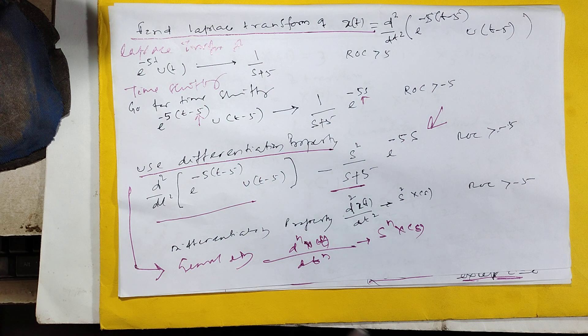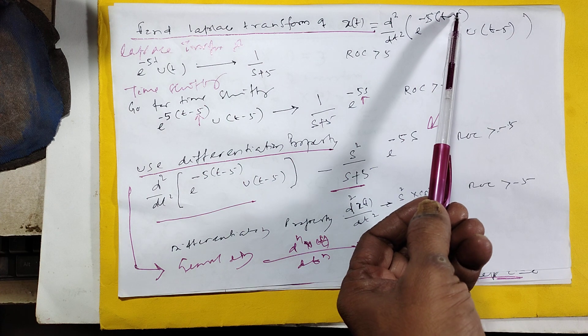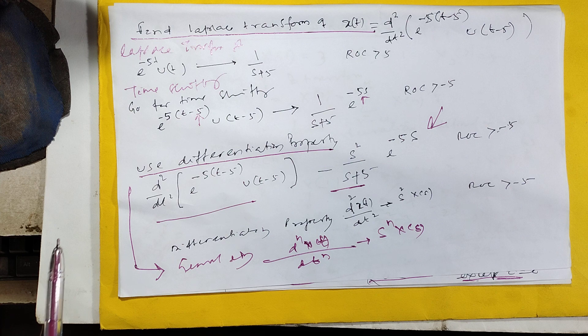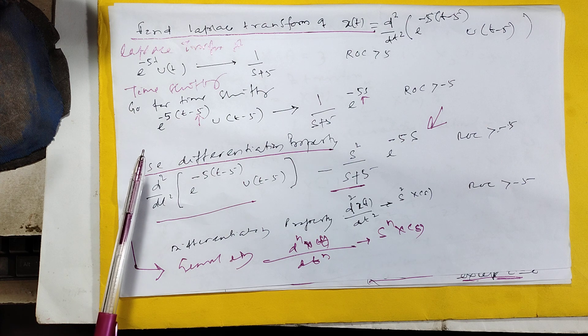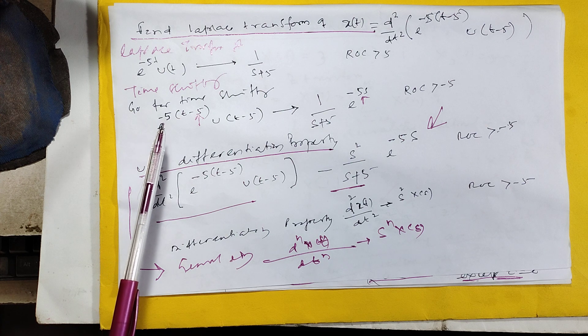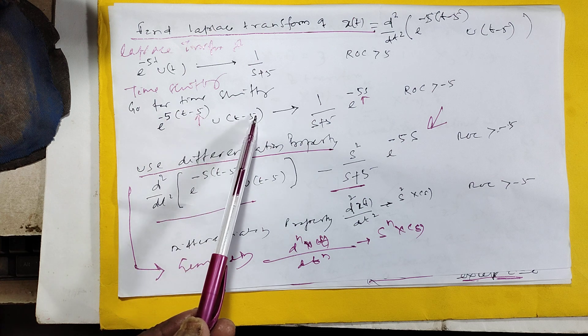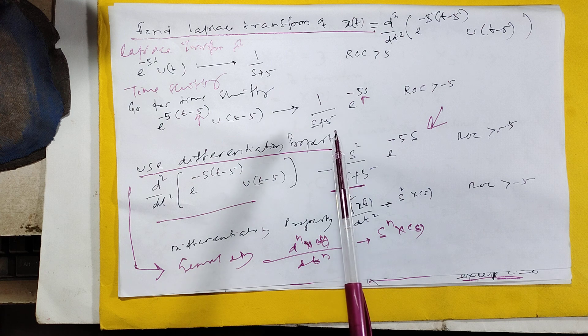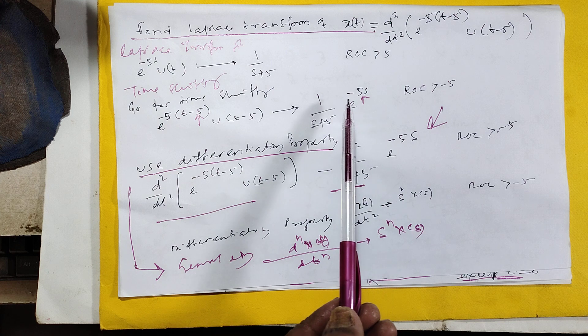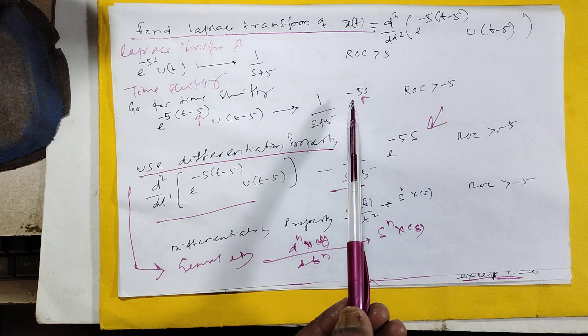Then you go for the time shifting. Why time shift? Because minus 5 is there. So when you go to time shifting, when it is e^(-5(t-5))·u(t-5).